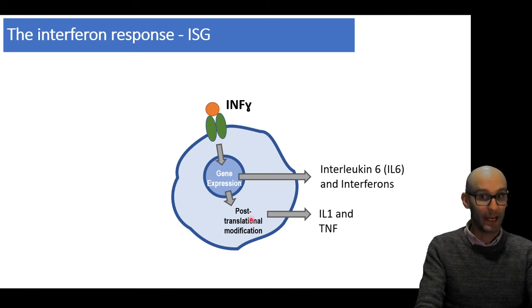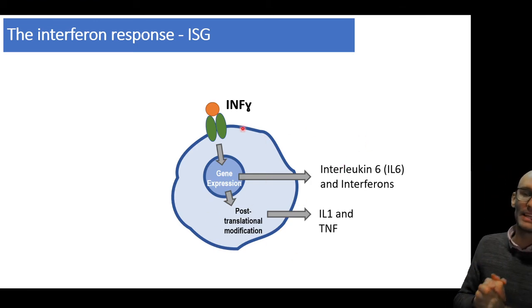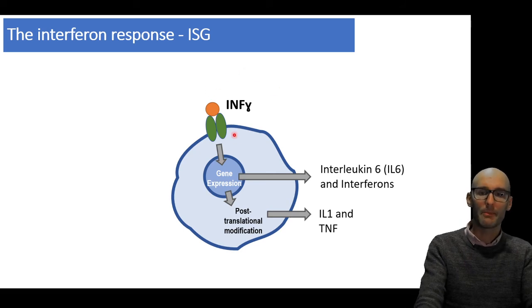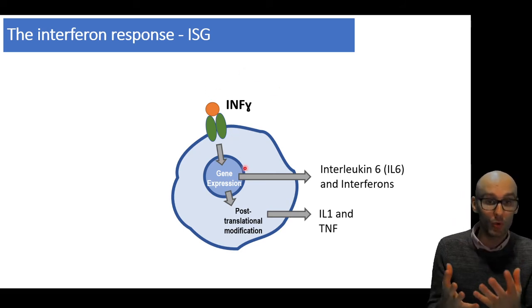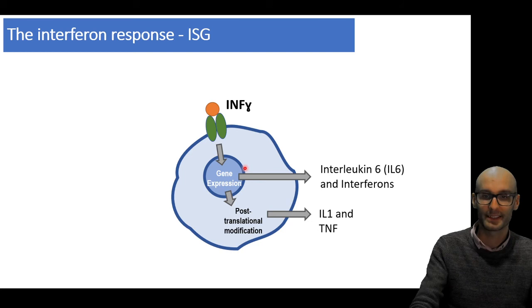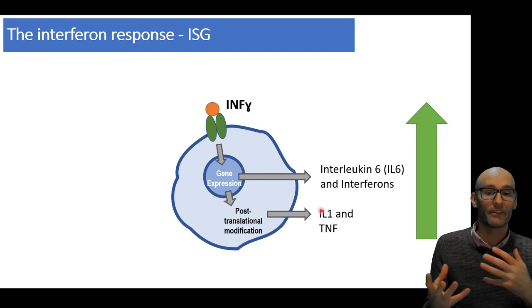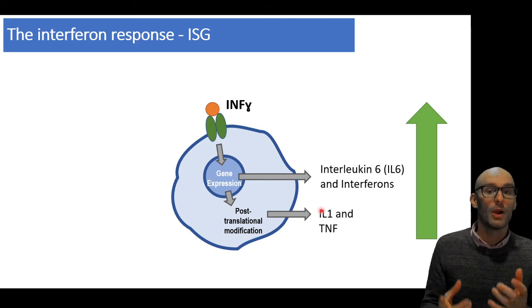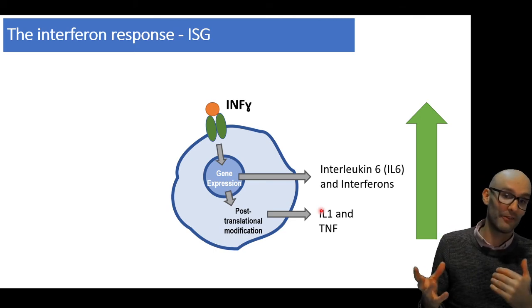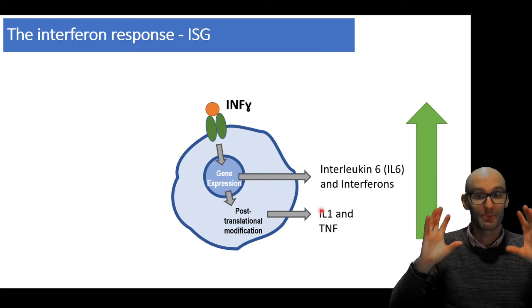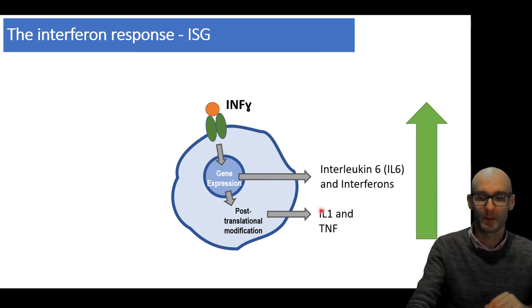And this is a macrophage. Macrophages also have the interferon gamma receptor. And in macrophages, the interferon gamma receptor actually promotes inflammatory cytokine signaling. So if it was going to produce a little bit of IL-6 and a little bit of IL-1, which are inflammatory cytokines or TNF-alpha, once its interferon gamma receptor is activated, it will start to produce way, way more of those inflammatory cytokines.